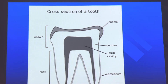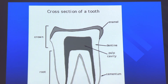Here you can see the different levels of the tooth: the crown, the enamel, the dentin, the pulp cavity, the cementum, and the root canal. The root canal holds all of those nerves, blood, and tissue.